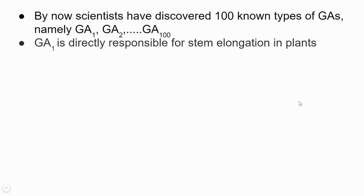Scientists have already discovered above 90 or around 100 different types of gibberellic acids or gibberellin hormones in the plant kingdom, named GA1, GA2 up to GA100. GA1 is the most scientifically studied and is known to directly affect stem elongation in plants. Most plants possess the GA1 variety of gibberellic acid, while other gibberellic acids are found in different living kingdoms.